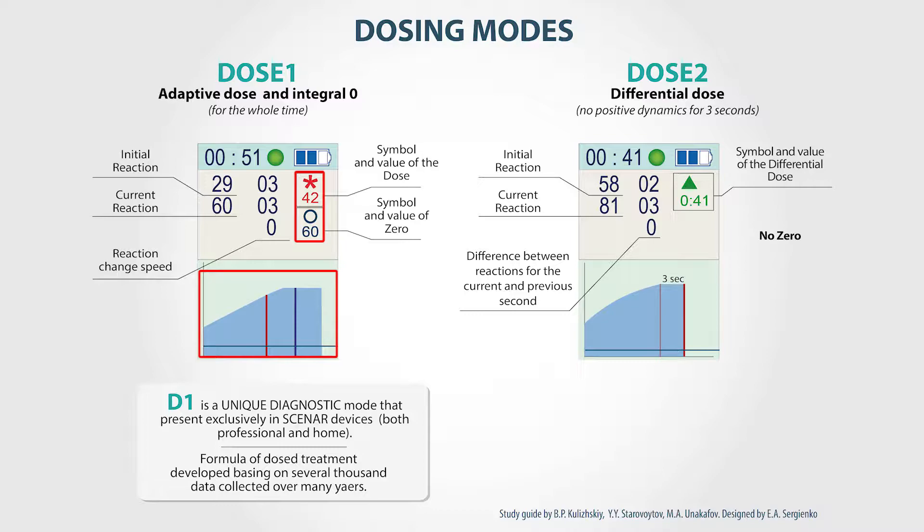We need to obtain a difference of 4 or higher. Then we can compare these two points, and apply the electrode to the place with a higher value, holding it there until the dose signal. After that, we measure the initial reaction in the next point and compare it to the initial reaction of the point we treated until the dose.